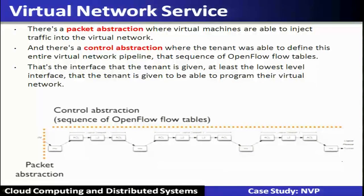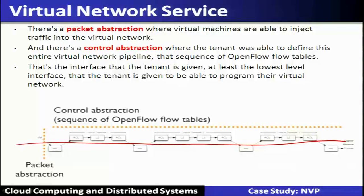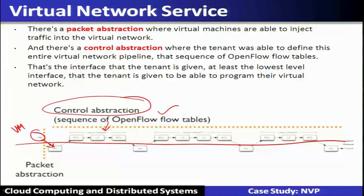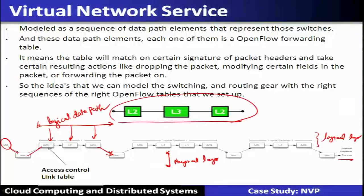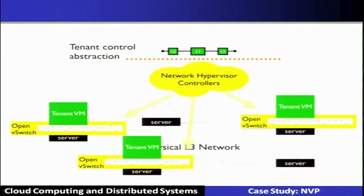There is a separation of packet abstraction — where virtual machines inject traffic into the virtual network — and control abstraction. The control abstraction is provided in the form of OpenFlow tables seen as access control list tables. That is the interface given to the tenant — at least the lowest-level interface — to be able to program their virtual network. The abstraction which the tenant can see is its virtual network specified in the form of virtual connections.